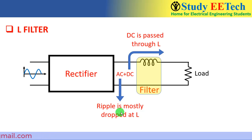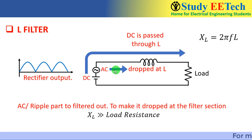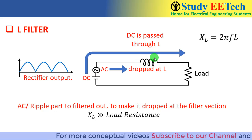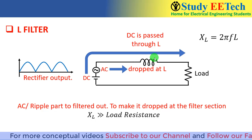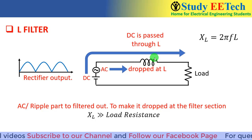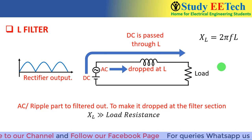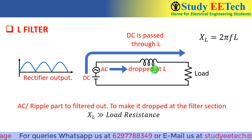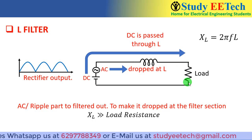The AC part — also called the ripple — is mostly dropped across the filter inductor. Because it is a series path, to make the ripple drop across the inductor we need XL to be much much greater than the load resistance, so that the AC part is mostly dropped there.